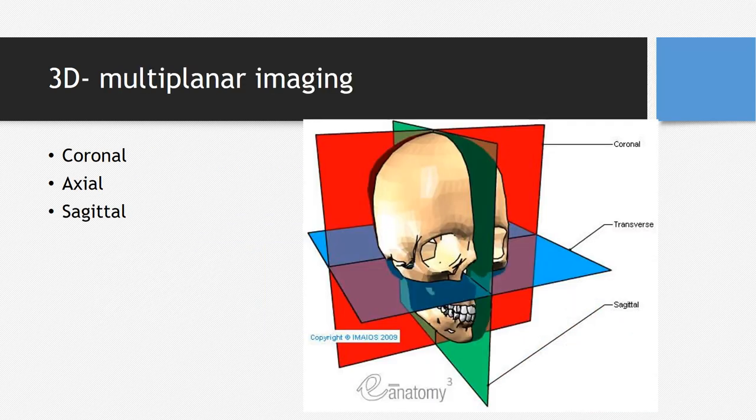In three dimensions, the terminology used to describe the planes or sections when viewing an image would be the coronal section, which is the facial part of the section; the axial section, also called a transverse section; and the sagittal section, which cuts the face in half at the midline.